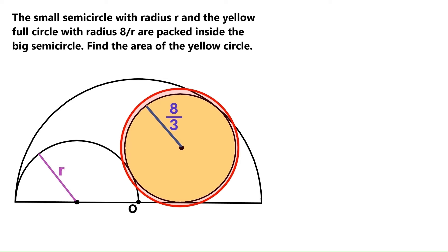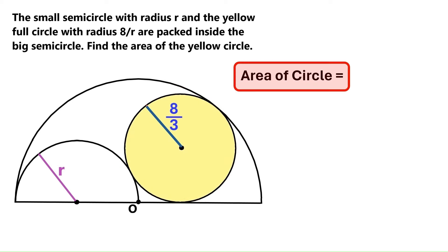I'll find the yellow circle's area. The area of a circle equals pi times the square of its radius. The radius of the yellow circle is 8 over 3. So I'll take the square of that.